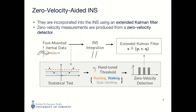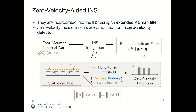Typically, the zero velocity pseudo-measurements are incorporated into the state estimate using an extended Kalman filter. As shown in this figure, zero velocity measurements are produced by a zero velocity detector, which uses a statistical test to determine if the IMU's readings are similar to that of a stationary IMU. Specifically, the linear acceleration should be equal to the acceleration due to gravity, and the angular velocity should be approximately zero. In practice, since these conditions are never exactly satisfied, we apply a threshold: if the statistical test output is smaller than this threshold, we assume the IMU is stationary and the zero velocity measurement is passed into the EKF.